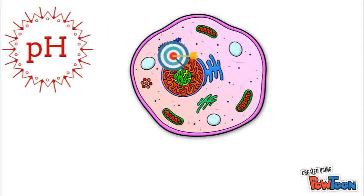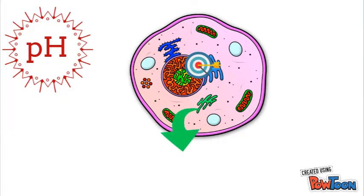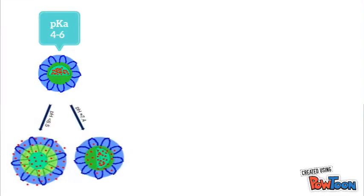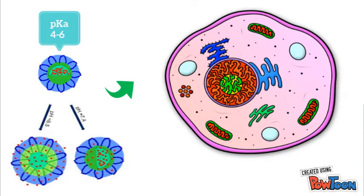First, the pH-responsive system. This system is used for intracellular delivery. In normal cells, the system depends on the difference in pH gradient inside the cell, where the pH is 4 in the lysosome and 6 in the endosome. Therefore, materials are chosen with functional groups with pKa between 4 and 6, to be able to change their physicochemical properties during endolysosomal trafficking.